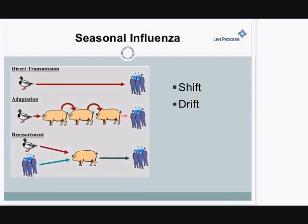Avian influenza — influenza itself is actually a zoonotic disease. It can be passed from animals to humans. And what we're finding with 2009 H1N1 is that it can actually be passed from humans back to animals. There have been numerous animals that have gotten H1N1 from their owners or from farmers. You've seen it in ferrets, cats, most recently dogs, as well as in chickens, pigs, and turkeys. As you can tell, the virus itself is still very fluid — it's still moving back and forth.